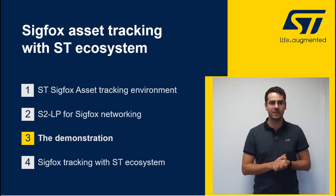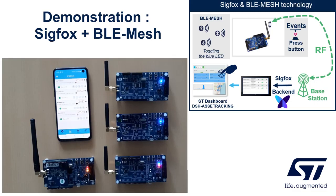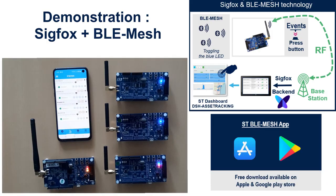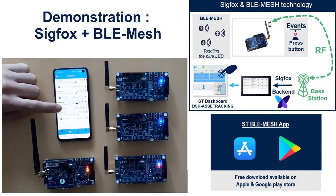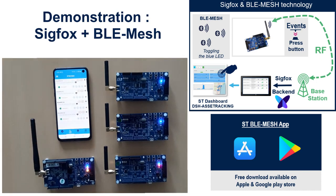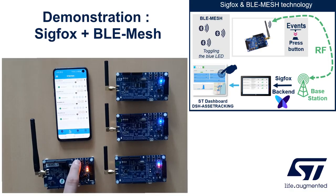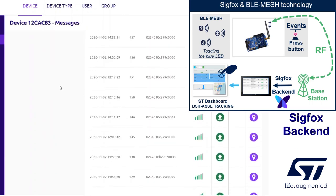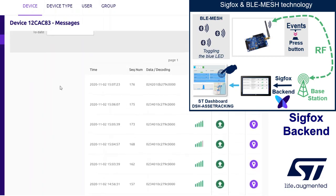So now let's complete the full demonstration. As you can see, we have a BLE mesh network composed of three BlueEnergy-2 evaluation boards and one gateway based on BlueEnergy-2 and S2LP. The gateway runs simultaneously both the mesh and Sigfox stack. When triggering a specific external event — for instance, pushing the button — it will send a 12-byte message on the Sigfox network. This message contains emulated sensor values such as temperature, pressure, and humidity.